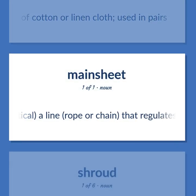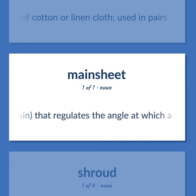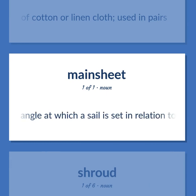Nautical: a line, rope or chain that regulates the angle at which a sail is set in relation to the wind.